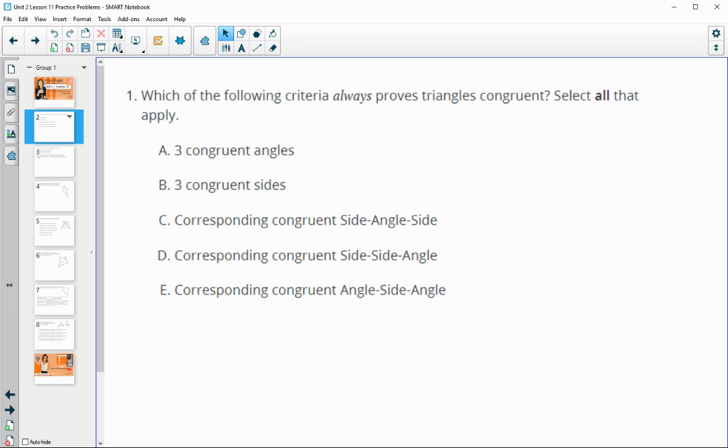Number one says, which of the following criteria always proves that triangles are congruent? Select all that apply.